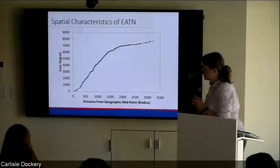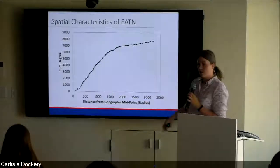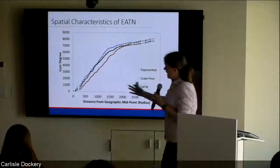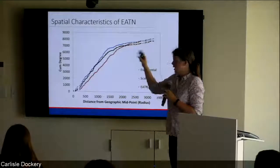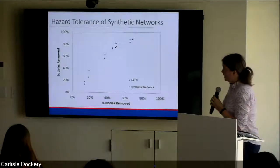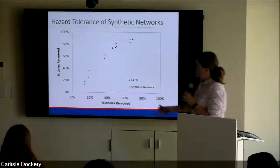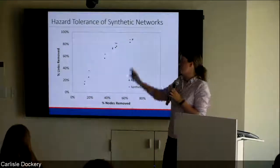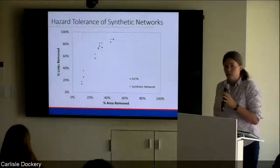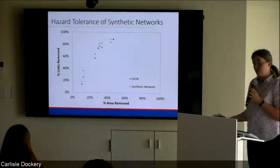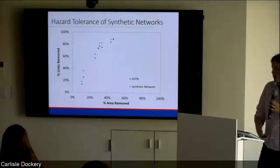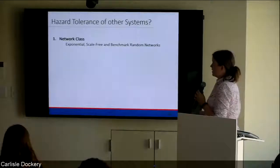We also needed to recreate the spatial characteristics - plotting distance from the midpoint of the network against cumulative degree. Our new networks were a much better fit. We subjected them to the same disruption that the European air traffic network had faced and got pretty similar results. What we showed was that this exponential network was vulnerable to a random hazard, which previous network theory said it should be resilient to. That's because its network architecture was taken into account but not its spatial characteristics.